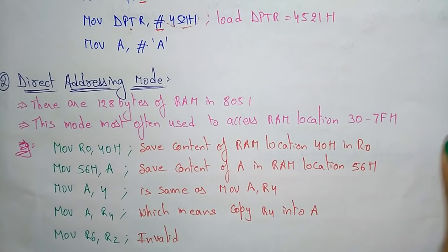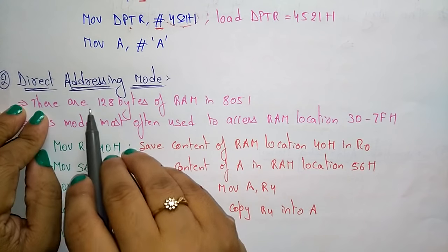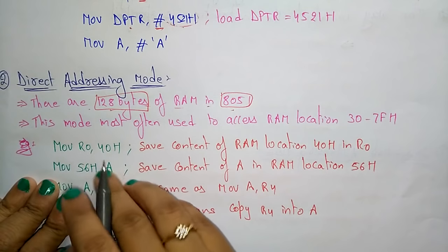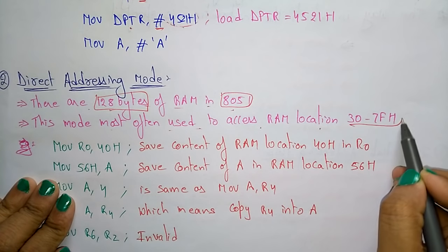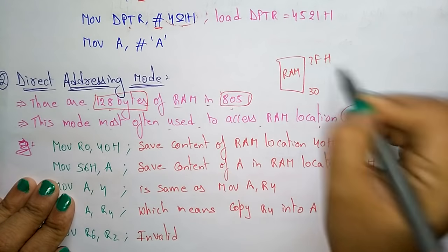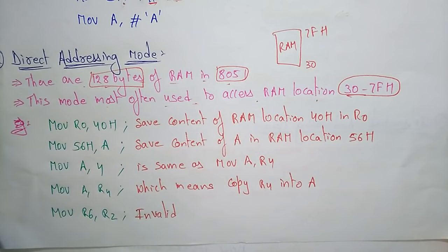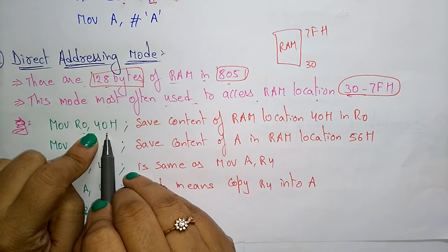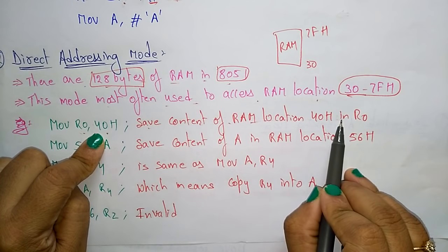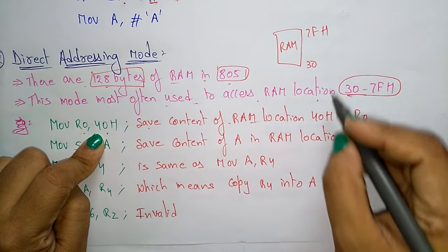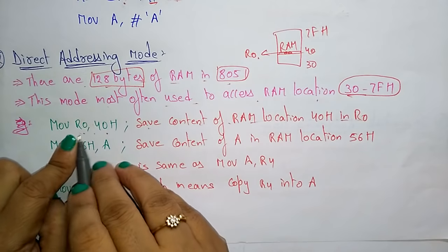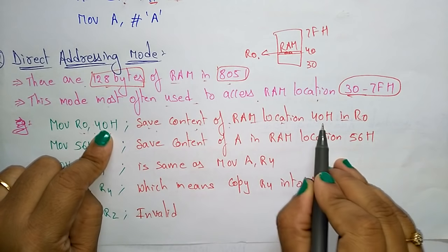Now coming to the direct addressing mode. In 8051, there are 128 bytes of on-chip RAM. This mode is most often used to access RAM locations from 30H to 7FH. For example, MOV R0, 40H — here no hash is mentioned, so it saves the content of RAM location 40H into R0. Whatever content is present at location 40H in data memory will be moved to R0 register.